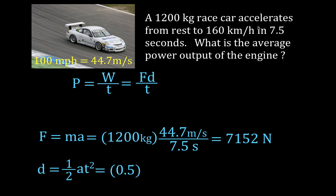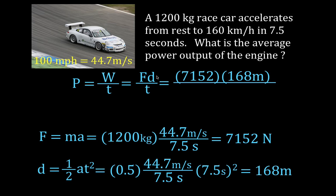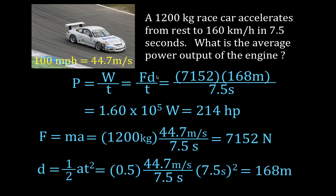We calculate the acceleration as the change in velocity over the change in time, then multiply by one-half and by time squared. We find that the car, going from rest to 160 kilometers per hour in 7.5 seconds, actually travels 168 meters. Now we know the force, the distance, and the time. Multiplying force times distance divided by time gives 1.6 times 10 to the 5 watts — and dividing by 746 watts per horsepower gives an average power output of 214 horsepower.